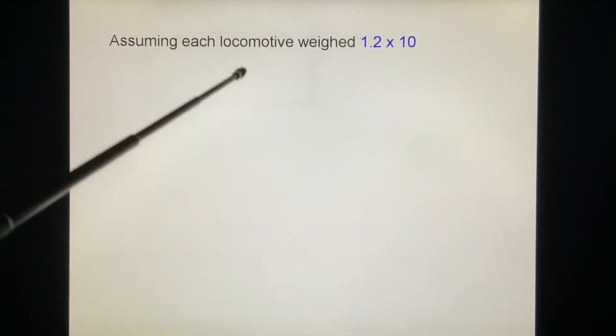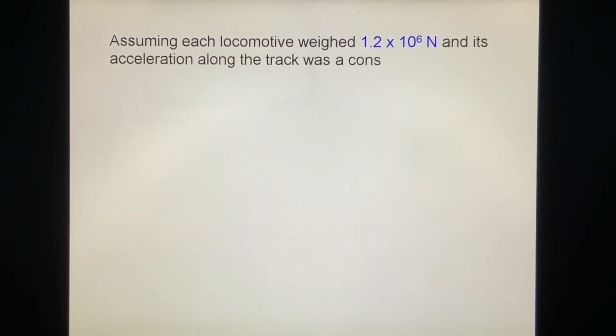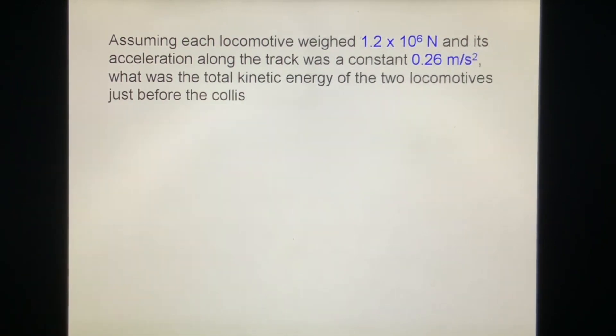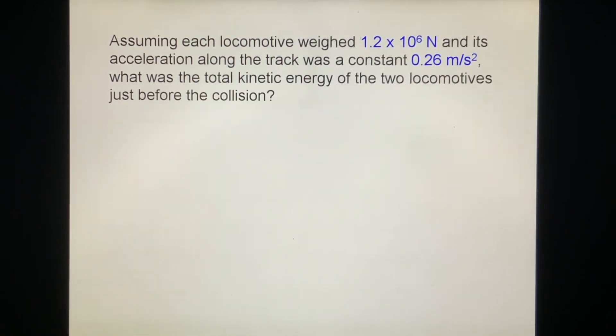Assuming each locomotive weighed 1.2 times 10 to the 6 newtons and its acceleration along the track was a constant 0.26 meters per second squared, what was the total kinetic energy of the two locomotives just before the collision?